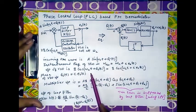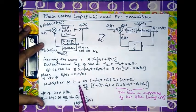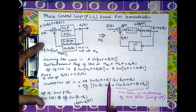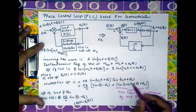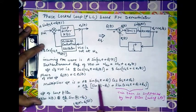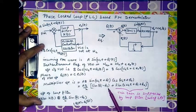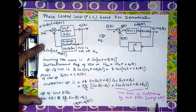The VCO output and FM wave are multiplied at the multiplier. The multiplier output is A·B·sin(ω_c·t + θ_i)·cos(ω_c·t + θ_0). Using the trigonometric identity, this becomes (AB/2)·sin(θ_i − θ_0) plus (AB/2)·sin(2ω_c·t + θ_i + θ_0). The higher frequency term containing 2ω_c·t will be suppressed by the loop filter, which has low pass filter characteristics.